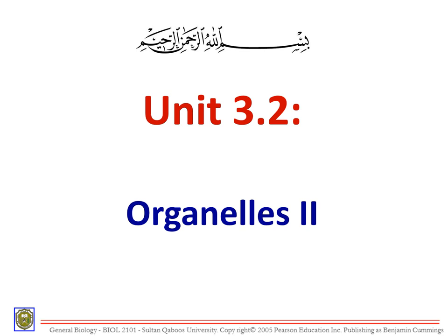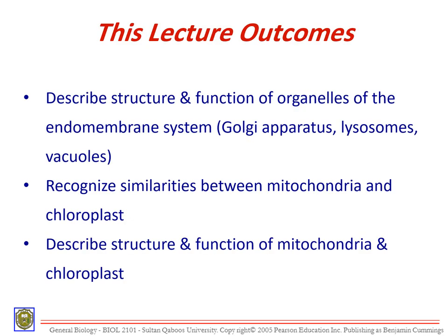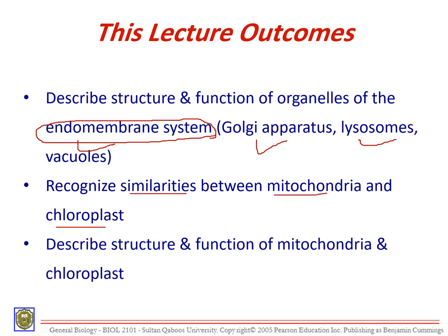We're going to continue for the next 45 minutes — not hours, don't panic — talking about the different organelles inside the cell. By the end of today's lecture, we want to describe the structure and function of organelles of the endomembrane system. Today we're going to talk about the Golgi apparatus, the lysosomes, and vacuoles. We're also going to recognize the similarities between the mitochondria and the chloroplasts, and describe their structure and function.